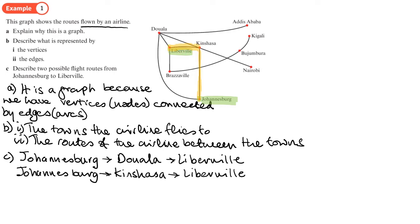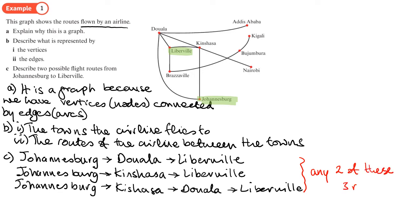I suppose another way I could go would be Johannesburg, Kinshasa, Douala, and then Liberville. That's another route I can take. I think they're the only routes we can take. Now the question just asks for two, so we can pick any two of these three routes we've got here.